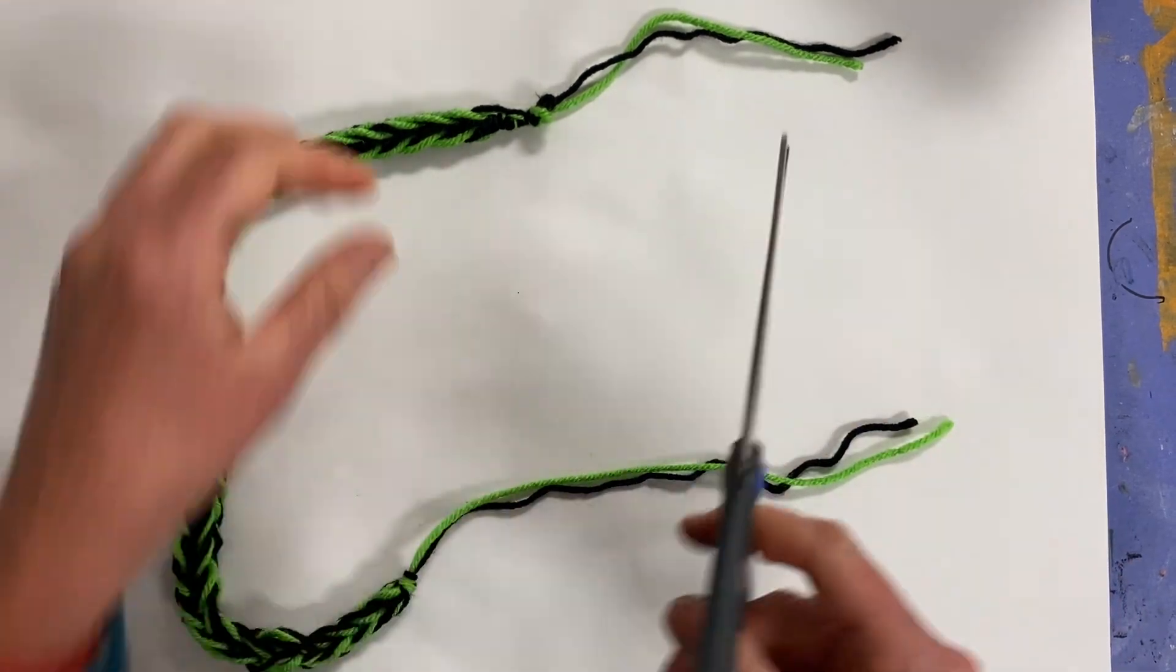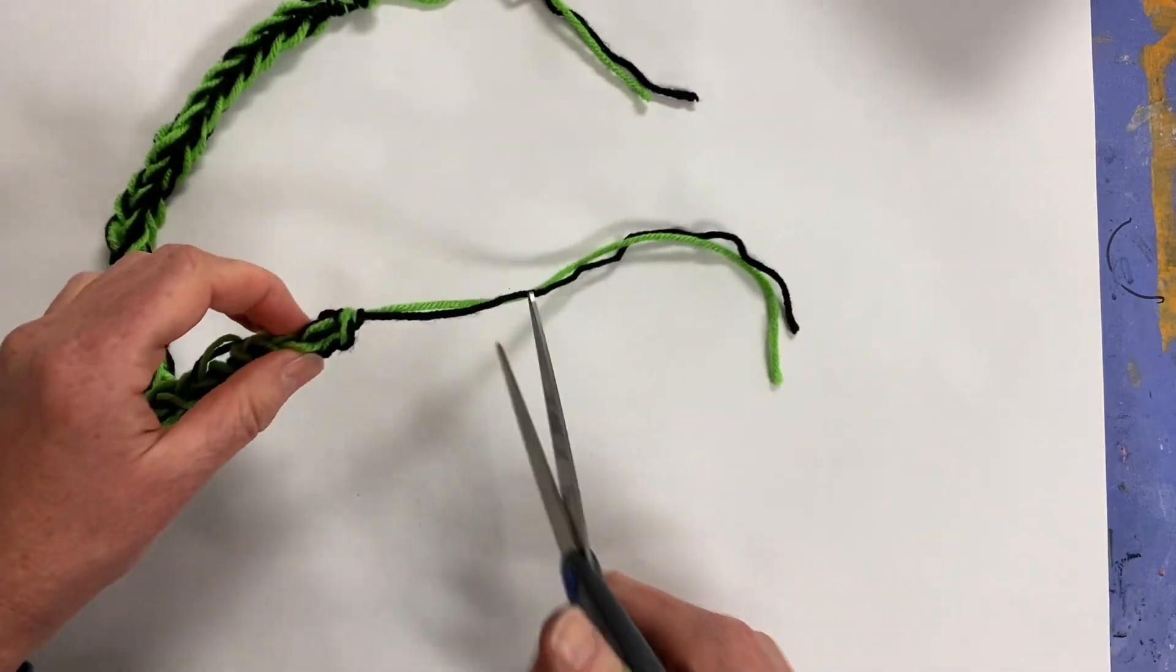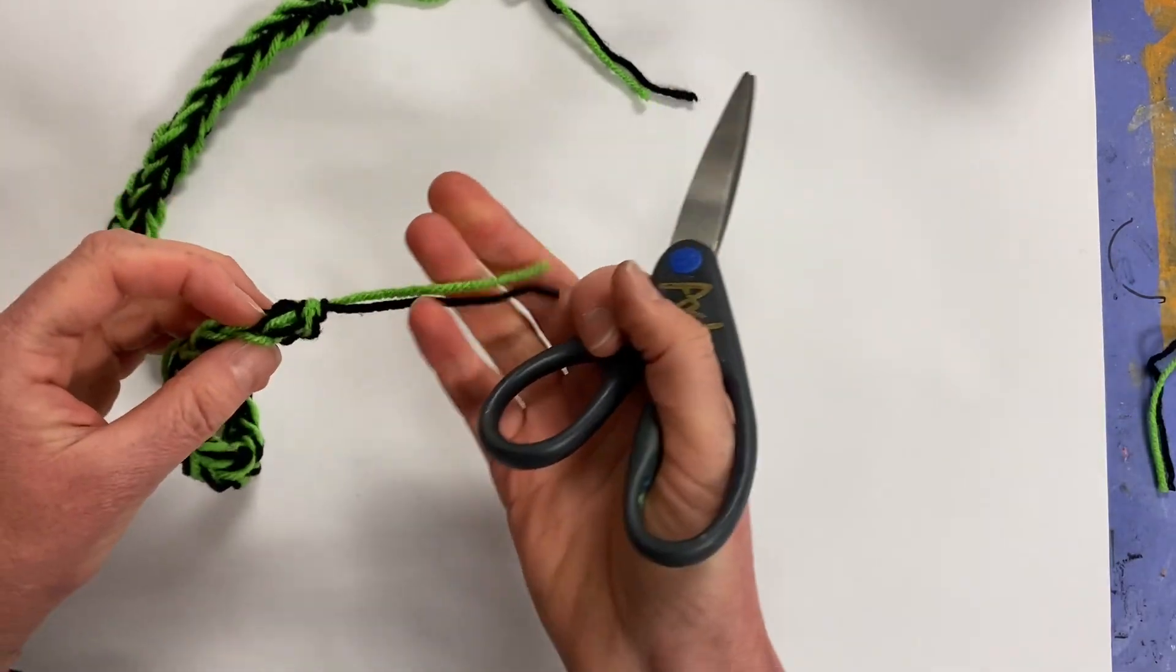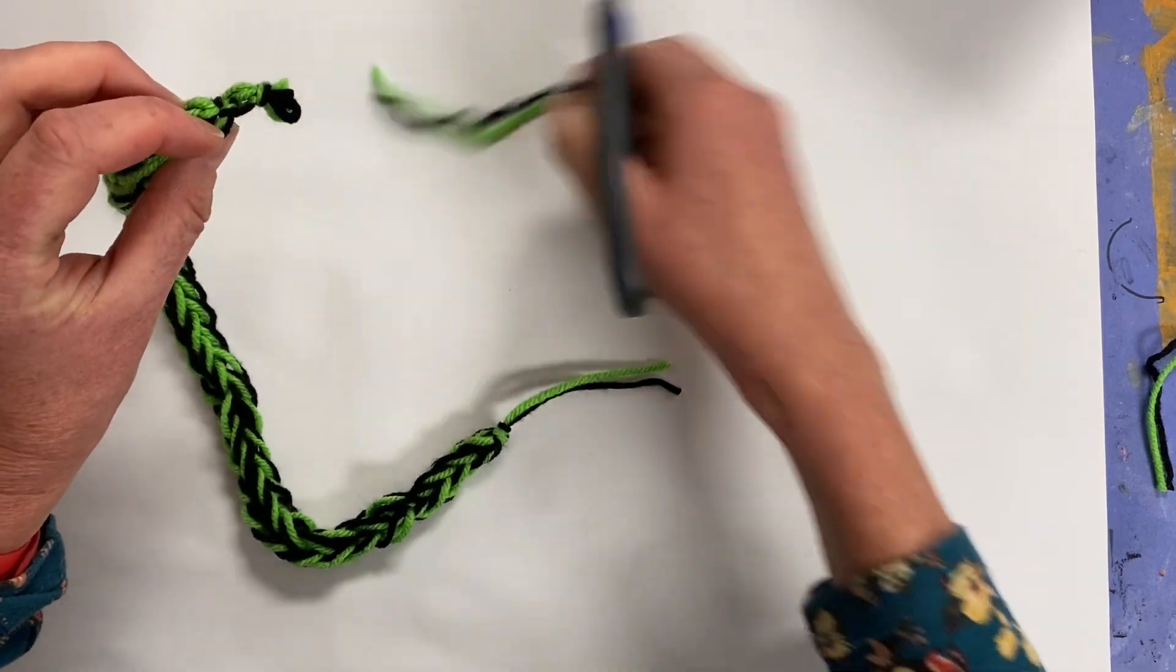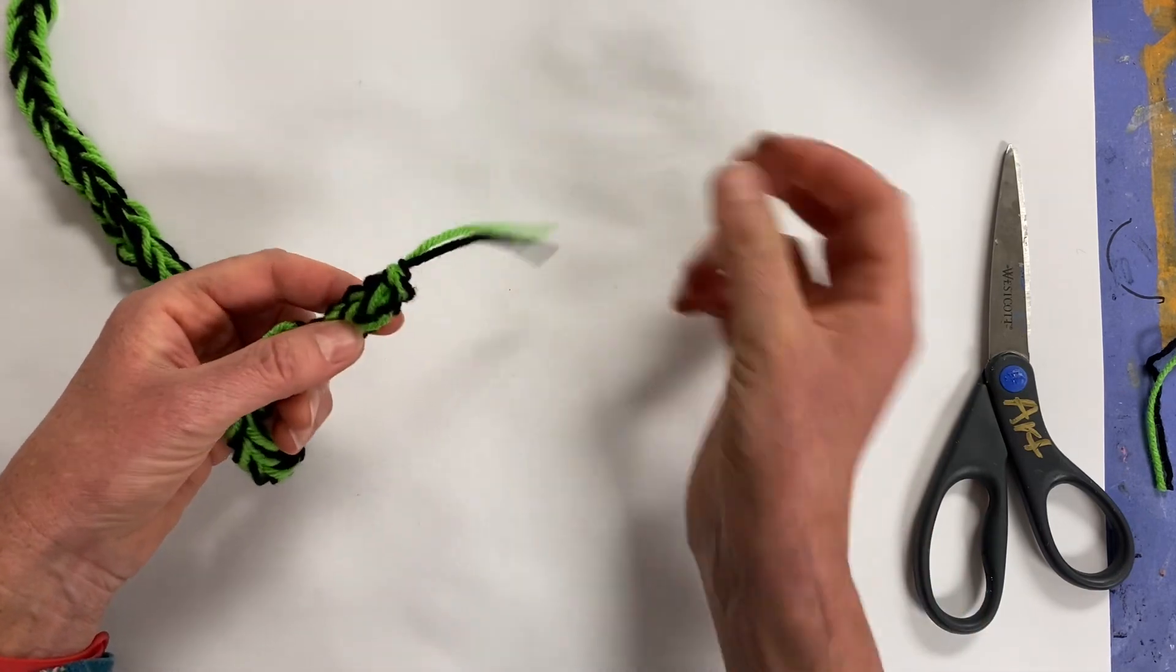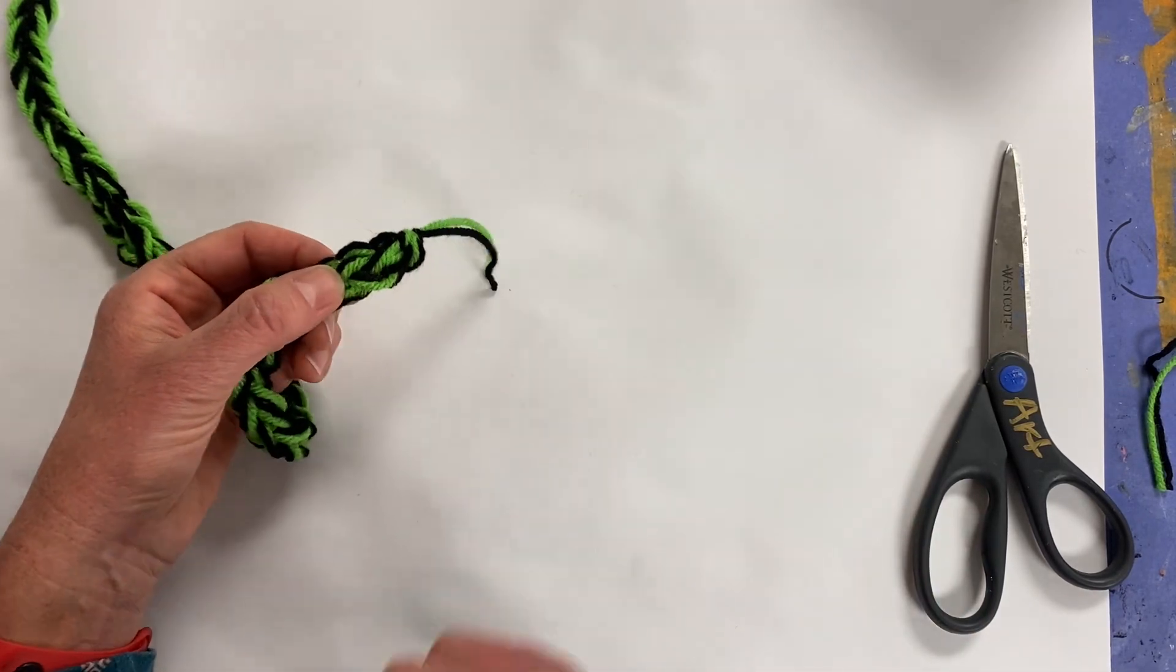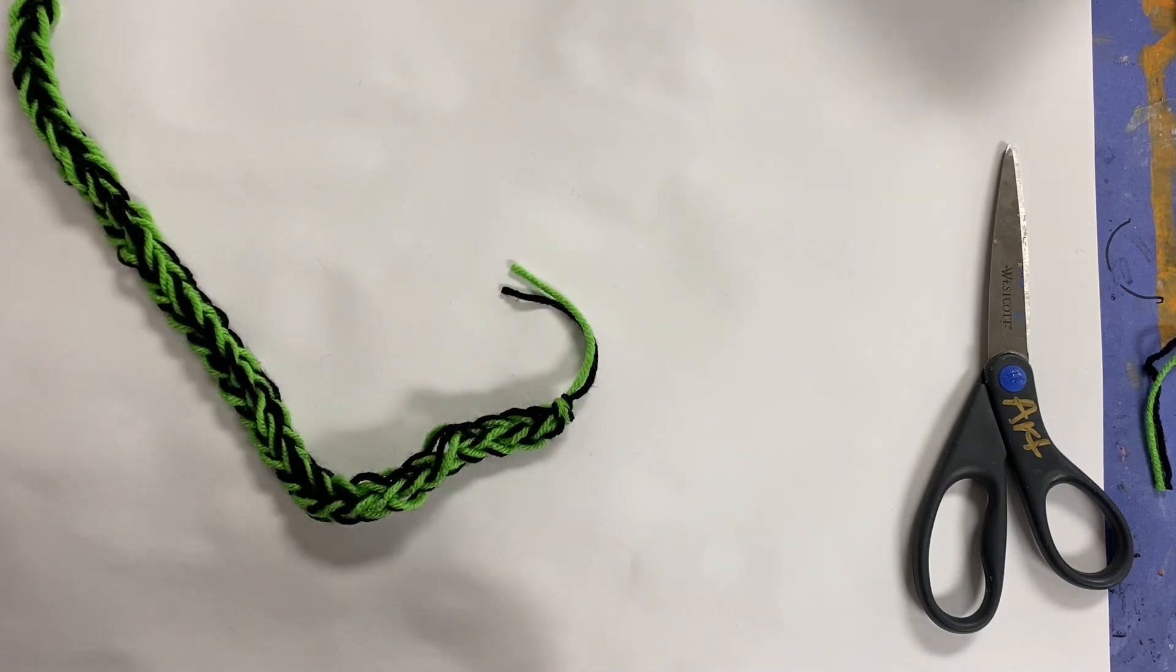And then you simply get to go and decide which end is going to be the head of your snake and trim back it. So you have like a tongue for your snake. And the other one, you just trim close to the end, being careful not to cut your knot. And you have a yarn snake. The very last step is to go and put two little eyes using glue. And that is how you end your yarn snake.